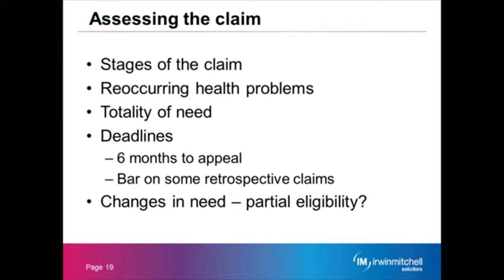But what if there is a finding of ineligibility? Then there is a right of appeal. In summary, there are three stages to an appeal: there is a local resolution procedure; if that doesn't work, there is then a referral to the independent review panel; and then if that still doesn't resolve the dispute, there could be a referral to the Parliamentary Ombudsman.